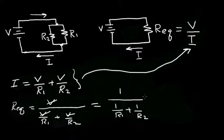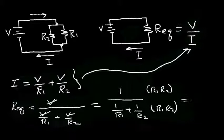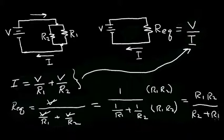Let's simplify this expression by multiplying the numerator and denominator by R1 times R2. When we do this, we get R1 times R2 divided by — the R1 cancels in one term — giving us R2 plus R1. So we find that the equivalent resistor is just the product of the two resistors divided by the sum of the resistors.